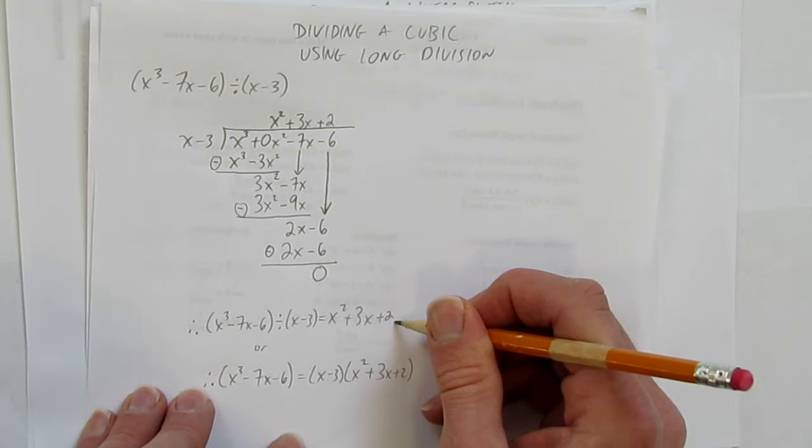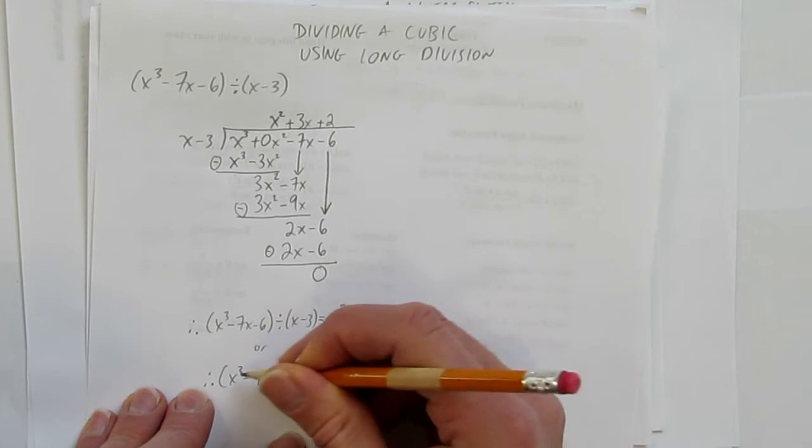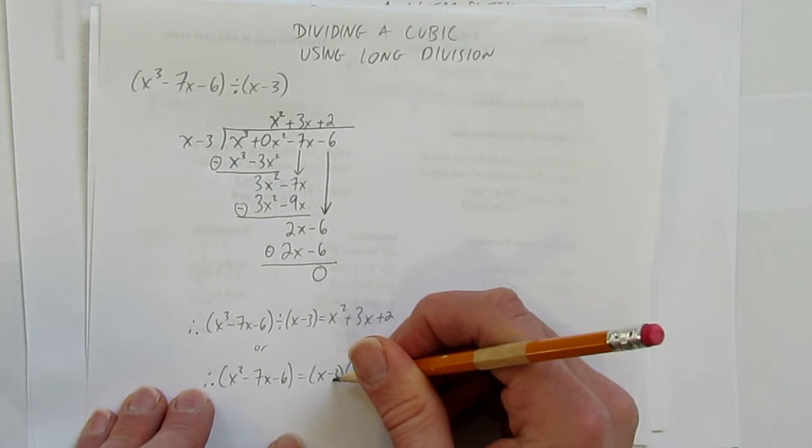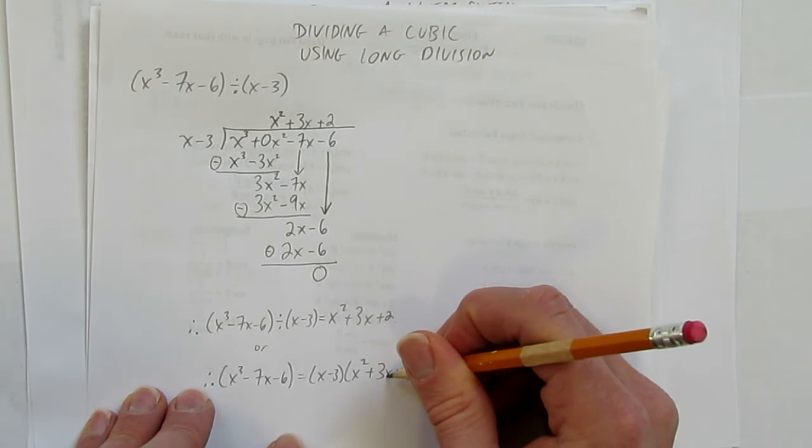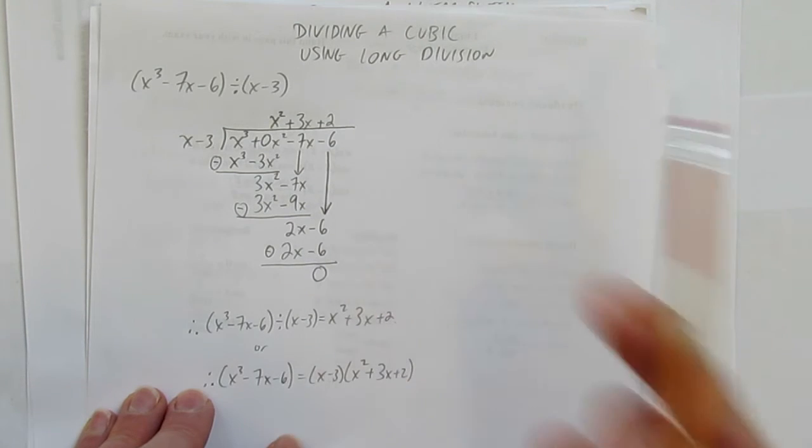When it divides evenly, you can write it as we did. But you can always write: polynomial = divisor × quotient + remainder. In this case, the remainder is 0. We've divided a cubic using long division.